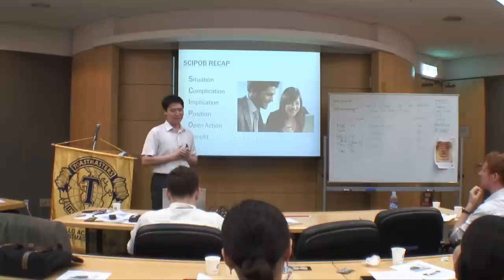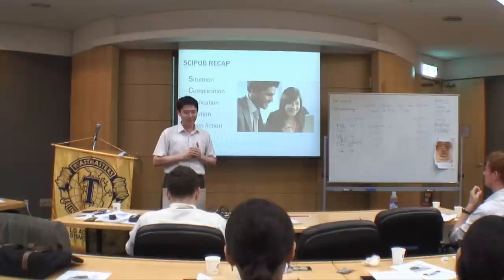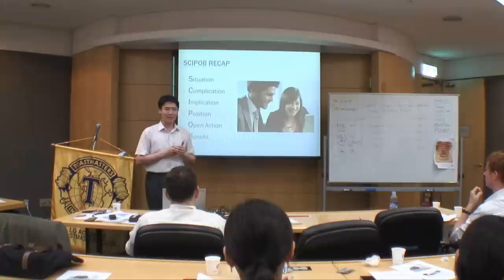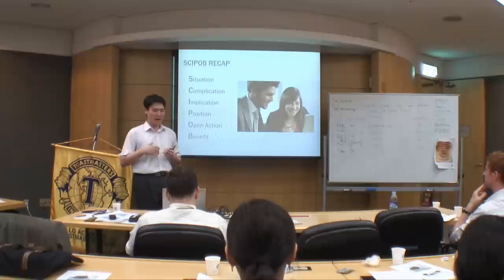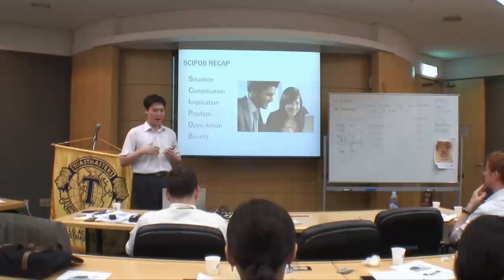So, I'm just recapping SciPub. S stands for situation. We go to the next stage: C for complication, I for implication. Next, P — position ourselves. Then open actions — what we should make them do. And overall B — benefits, and what we will get from them. So with SciPub, we can stand in a meeting and say to managers: promote me. Thank you.